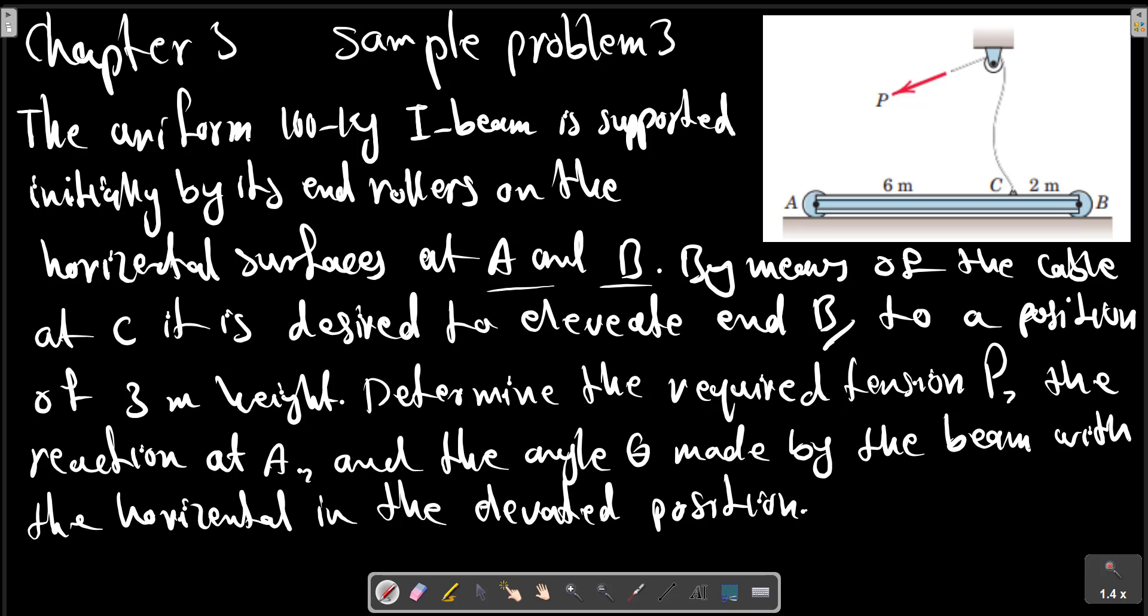Chapter 3 Sample Problem 3. The uniform 100 kg I-beam is supported initially with its end rolling on the horizontal surface at A and B. By means of the cable at C, it is desired to elevate end B to a position 3 meters above end A. We determine the required tension P, the reaction at A, and the angle theta made by the beam with the horizontal in the elevated position.